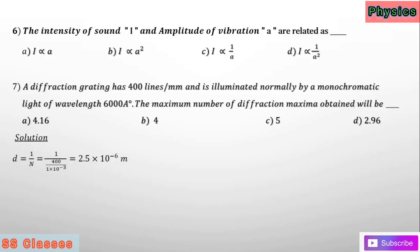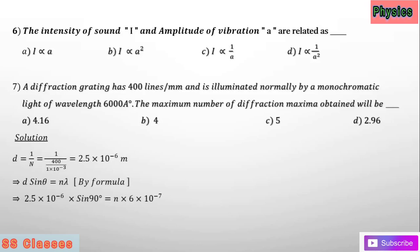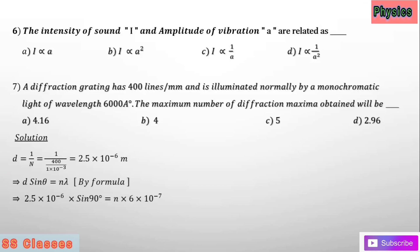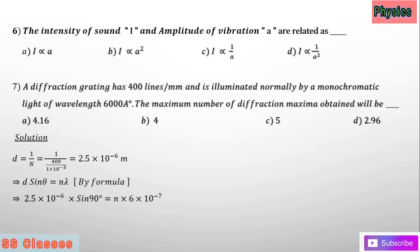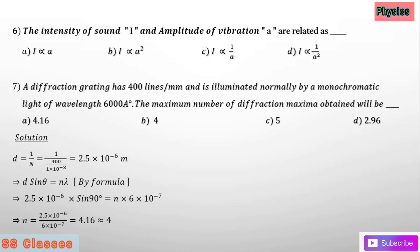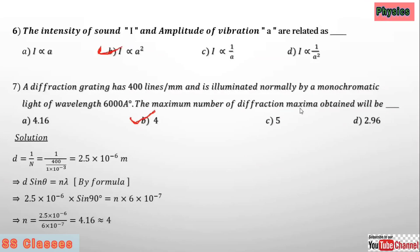Question number seven: find d, the distance between lines in a diffraction grating for monochromatic light. d equals 1 by number of lines, giving 2.5 × 10⁻⁶ meters. Using the formula d sin θ = n λ, substituting values gives n = 4.16, which is nearly equal to 4 since n cannot be a decimal. Option B is the answer.